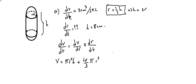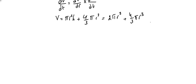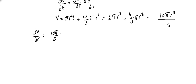After substituting h = 2r, the volume becomes V = 2π r³ + (4/3)π r³. Adding these: 6π/3 + 4π/3 gives 10π/3, so V = (10π/3)r³. Now differentiating both sides with respect to r: dV/dr equals 3 times (10π/3), which is 10π r².